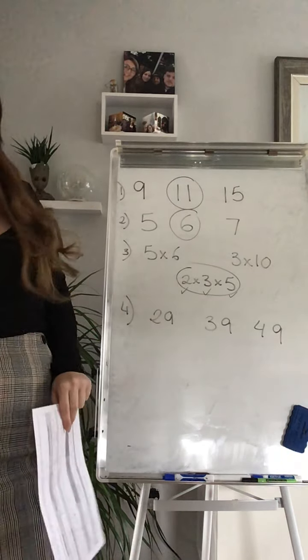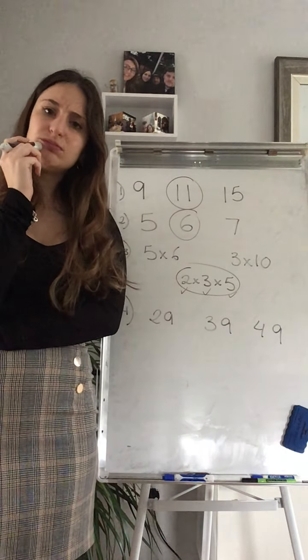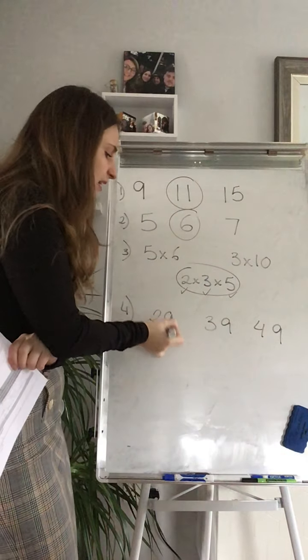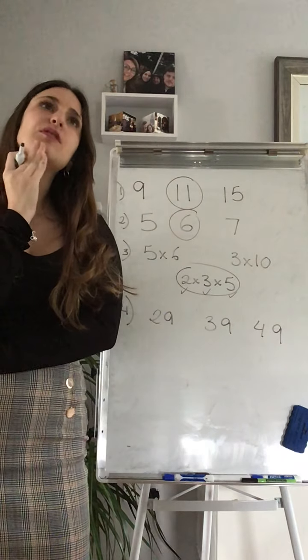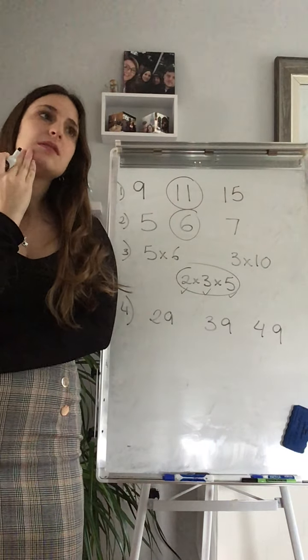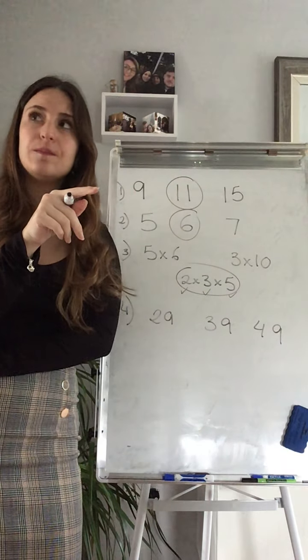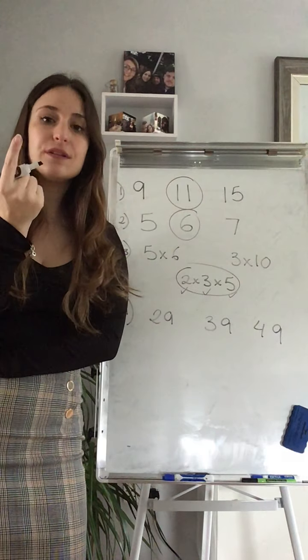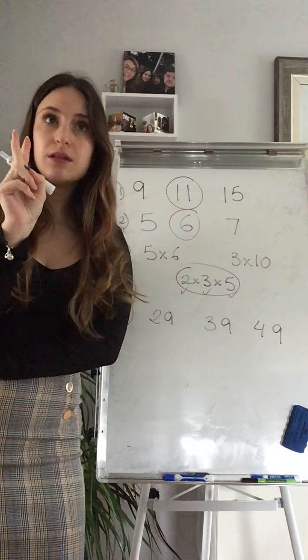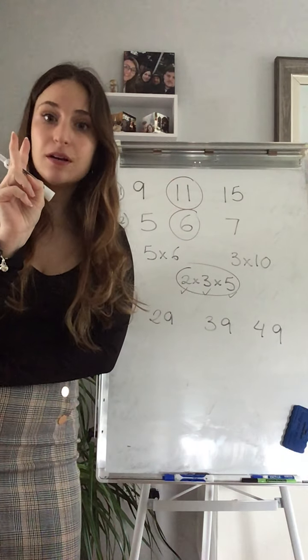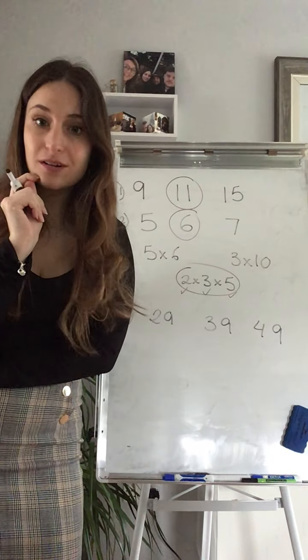Is 29 in any of the timetables that I know? No. Not that I know of. So at the minute it could be. Let's go to 39. Will 39 be in any of the timetables that I know? It's not, but I have 3 times 10 is 30, 3 times 11 is 33, 3 times 12 is 36, 3 times 13 is 39. So it will be divided by 13. So this is not.